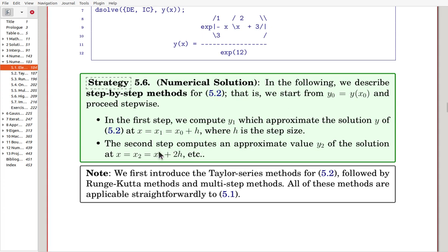And in the second step, we'll try to get the y sub 2. x2, that is, again, approximation of, okay, that is an approximation of y at x2. x2 is now x0 plus 2h. In this way, we try to get the numerical solution one step at a time.